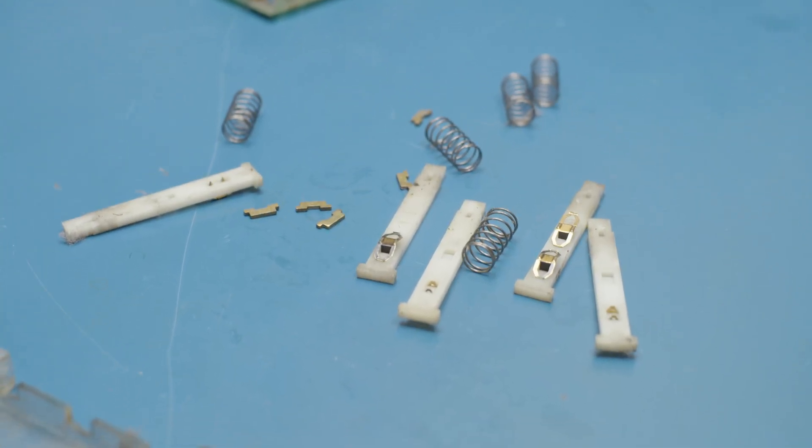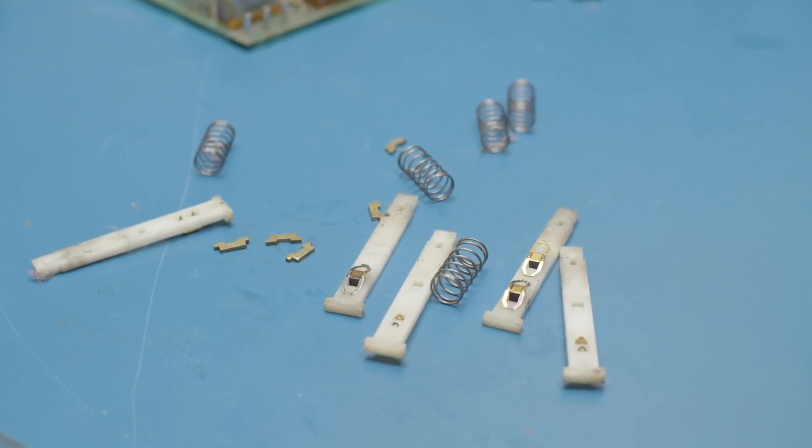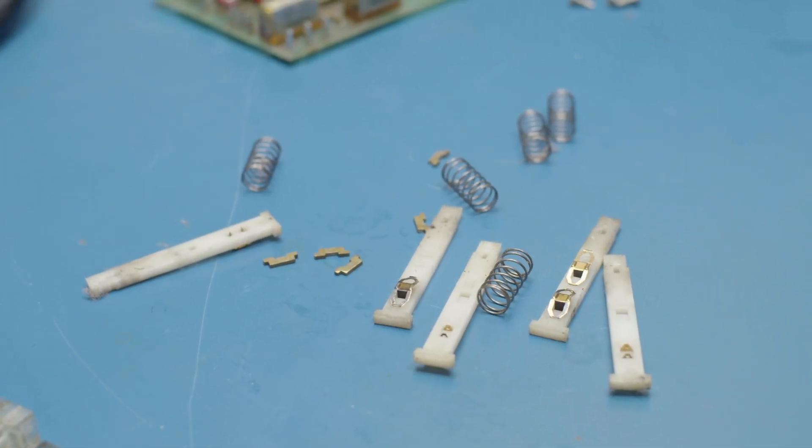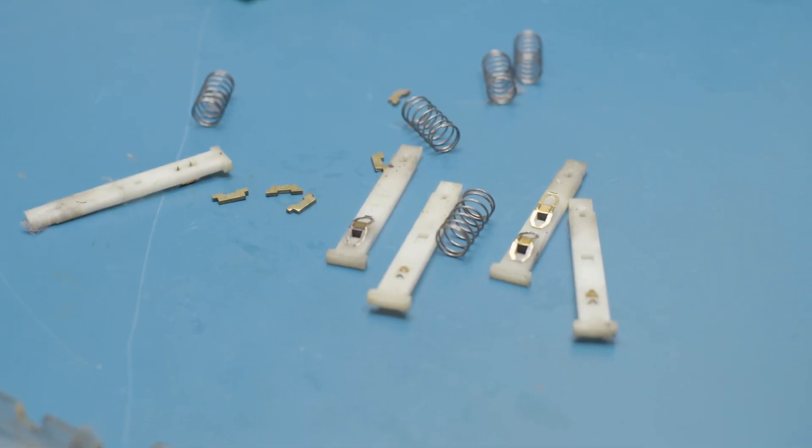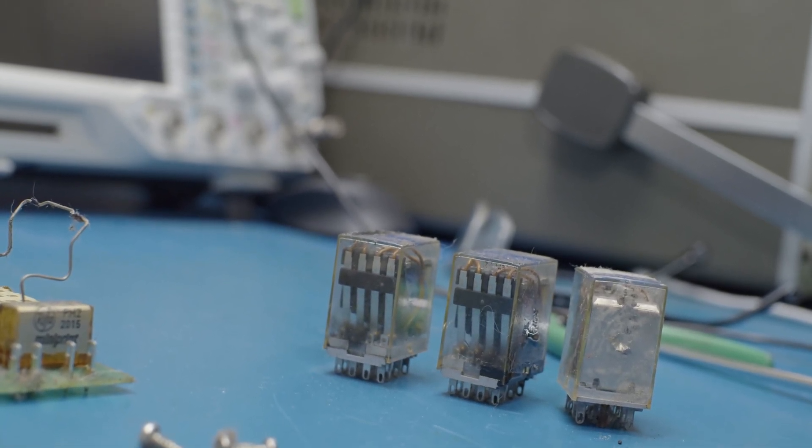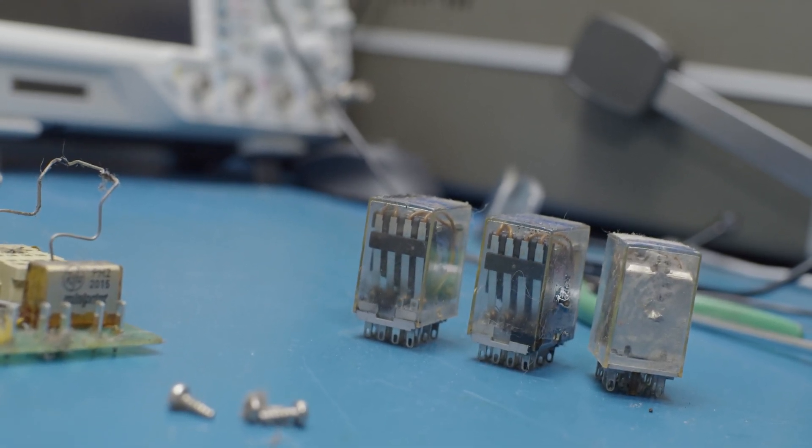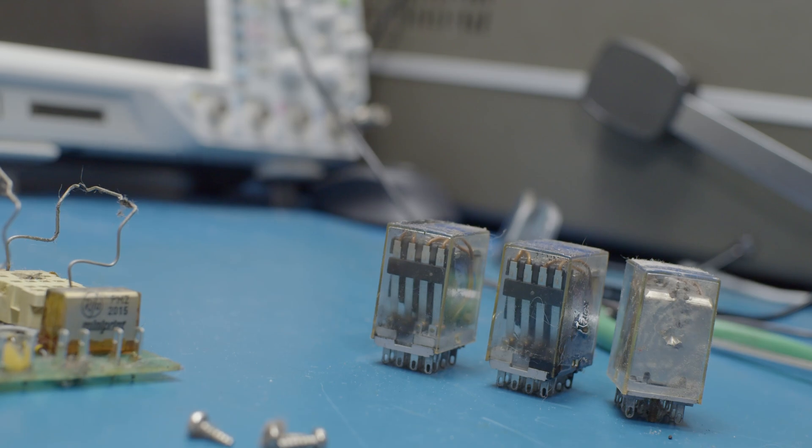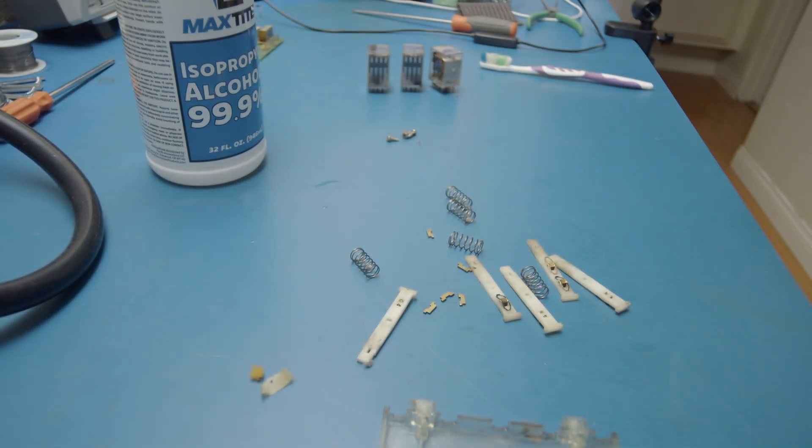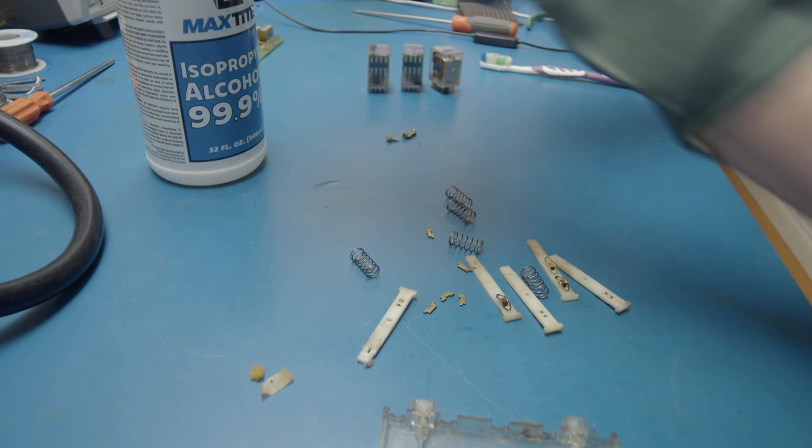There are all the bits. If you have an ultrasonic cleaner you can just chuck them in it, otherwise you can use a toothbrush with isopropyl alcohol to clean that stuff off. The same goes for the relays. I'm going to take off the plastic cases and just clean everything with isopropyl alcohol and a toothbrush. I don't like immersing things like that in water so I won't do that.